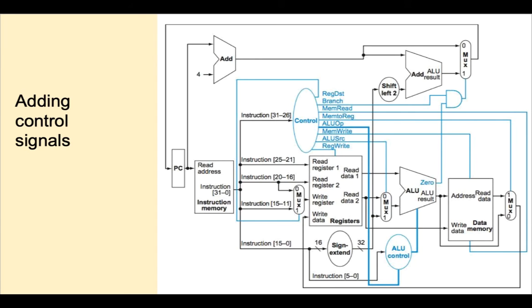Most of the control signals, shown in blue, come out of the main control unit. The input to the control unit is the opcode. That means most of the control signals are determined solely by the opcode.